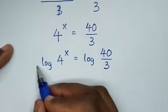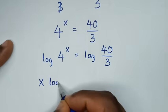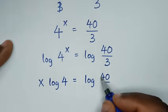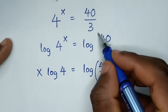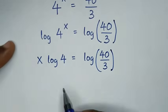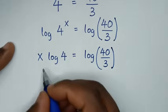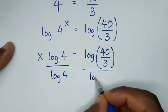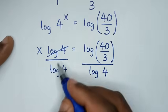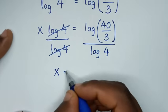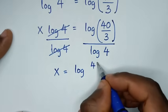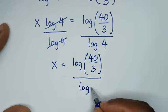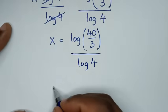From here we apply log to both sides: log(4^x) = log(40/3). The exponent x moves to the front, giving x·log(4) = log(40/3). Then dividing both sides by log(4), we get x = log(40/3) / log(4).